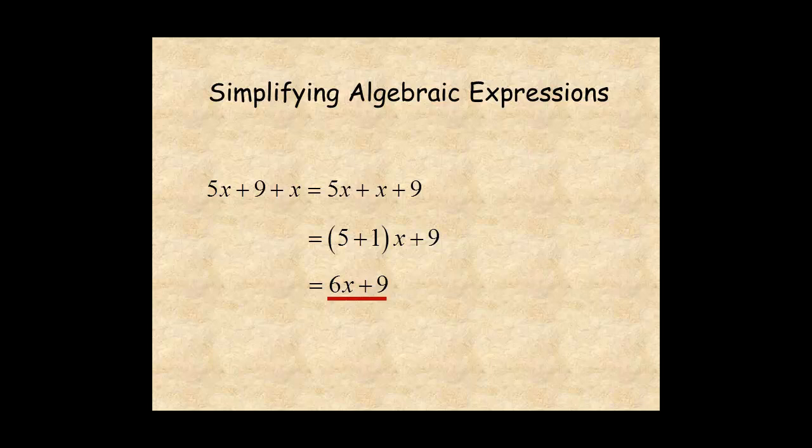Notice that you don't combine 6x and 9. These are not like terms. 9 is a constant term. It has no variable. Also, remember that when you see a variable all by itself, its coefficient is 1. So, read x as 1x.